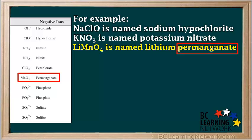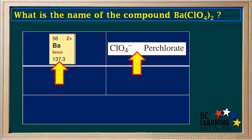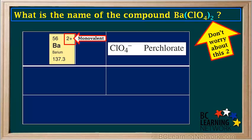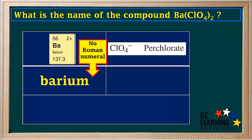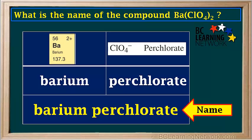The polyatomic ion MnO4⁻ is called permanganate, so LiMnO4 is simply named lithium permanganate. Let's do a couple of examples of naming compounds with polyatomic ions. What is the name of the compound Ba(ClO4)2? We find the element barium on the periodic table, and the polyatomic ion ClO4⁻, perchlorate, on the ion table. Barium has only one possible charge, so it's monovalent. Because barium is monovalent, we don't need to worry about the brackets and the two outside the brackets. Monovalent elements don't need roman numerals, so we simply use barium and perchlorate to create the name. So the name of this compound is barium perchlorate.